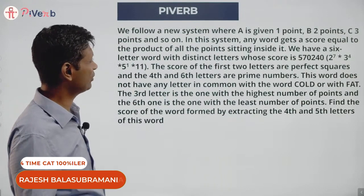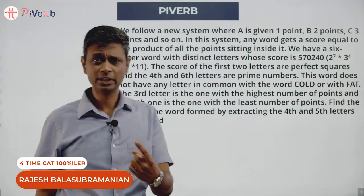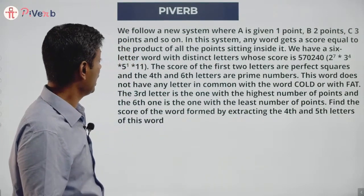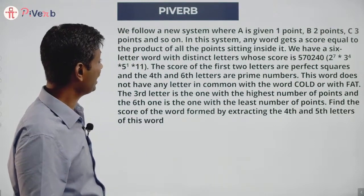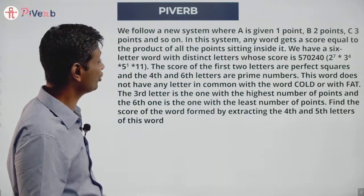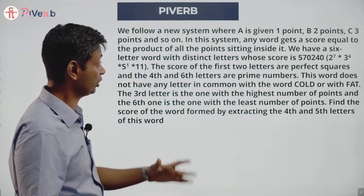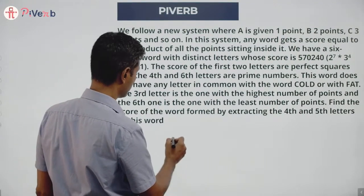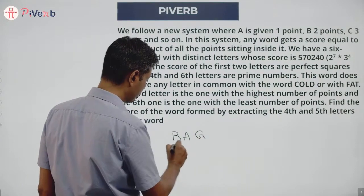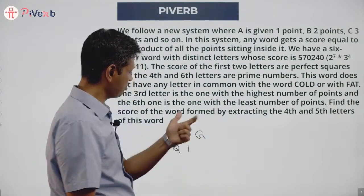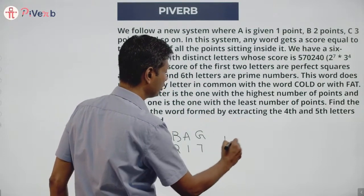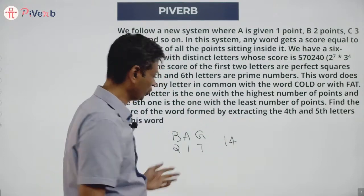We follow a new system where A is given one point, B is given two points, C three points, and so on. In this system, any word gets a score equal to the product of all the points of the letters inside it. So if we have the word BAG, B would be 2, A would be 1, G is 7 — the score would be 14, two times one times seven.